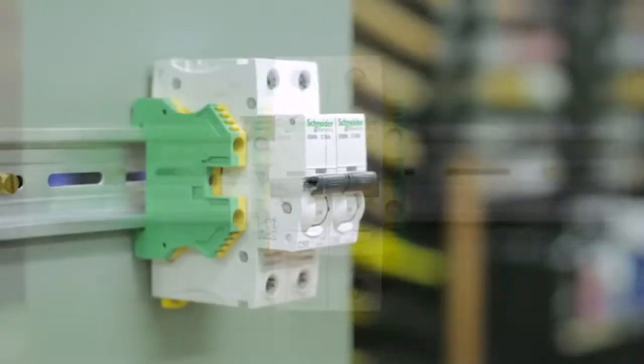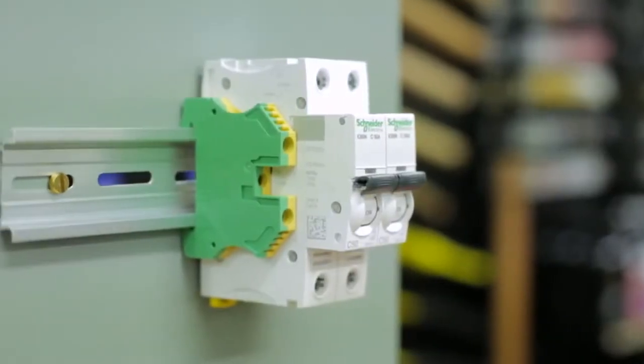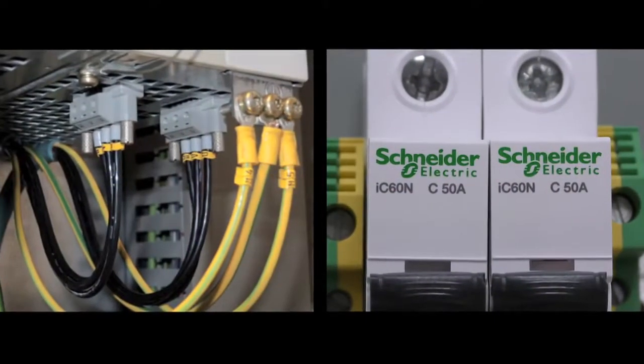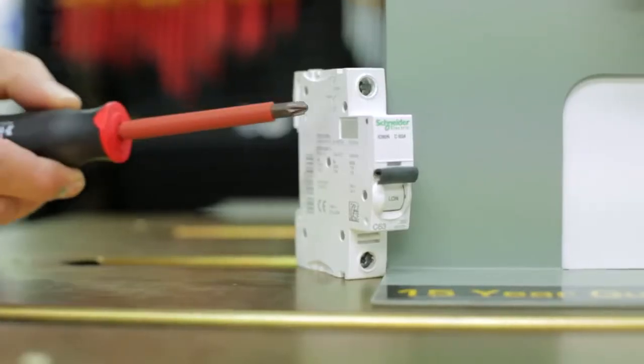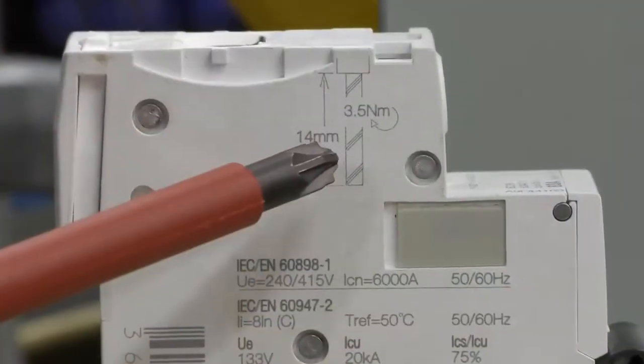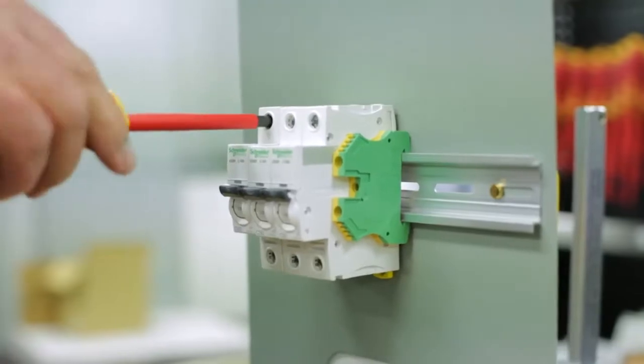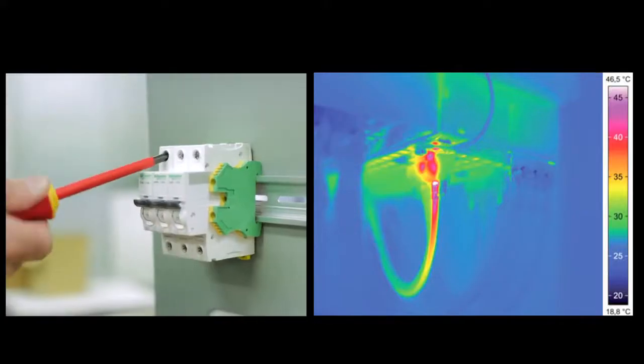Switchboard cabinets and machines are increasingly equipped with screws made of copper, aluminium and plastics. Over-torquing will damage screw and thread and prevent the connection from being safe. Under or over-torquing may result in heat build-up.